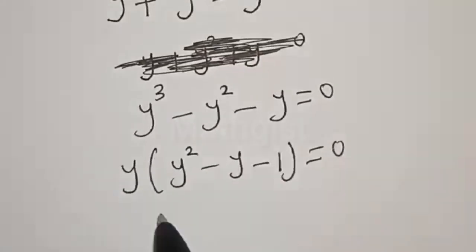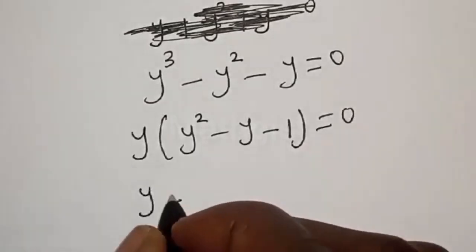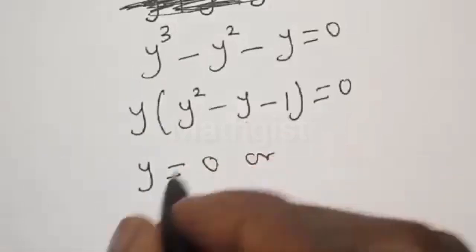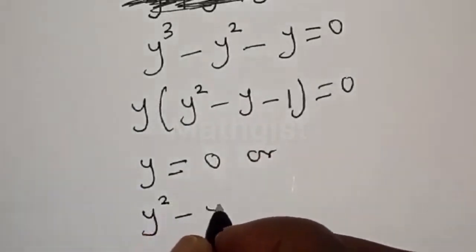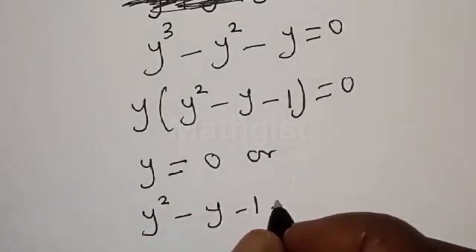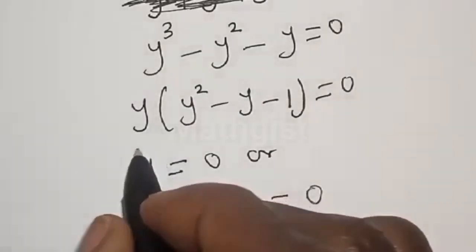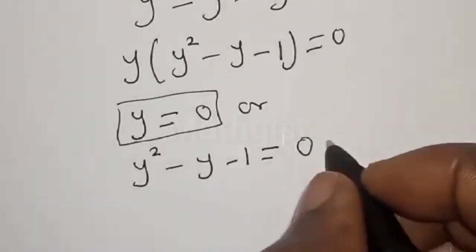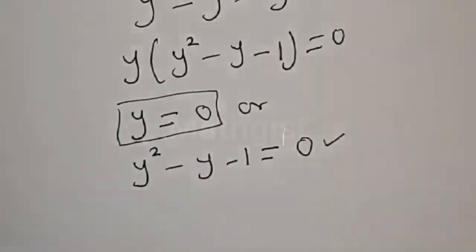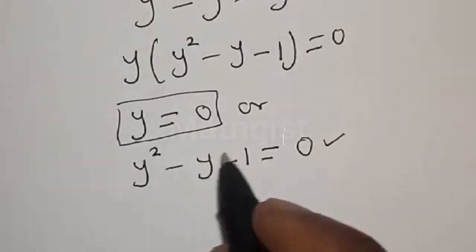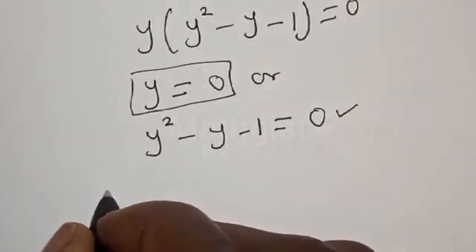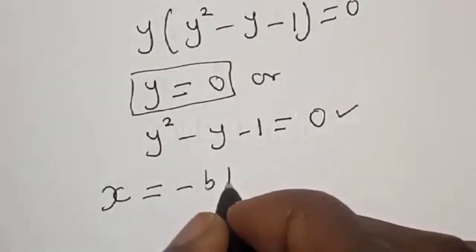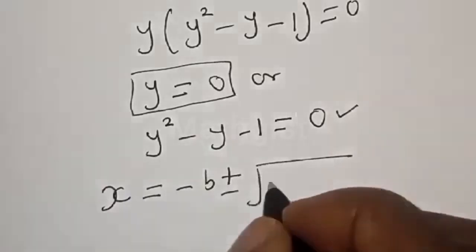Factoring y out, we have y times the quantity y squared minus y minus 1 is equal to 0. From here we have two cases: y is equal to 0, or y squared minus y minus 1 is equal to 0. The second is a quadratic equation, so let's solve it using the quadratic formula.